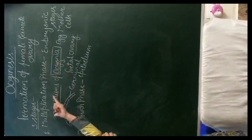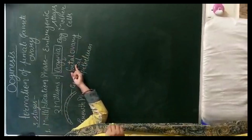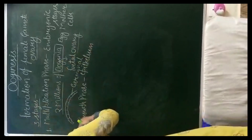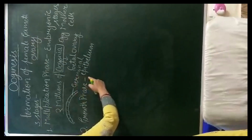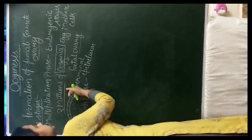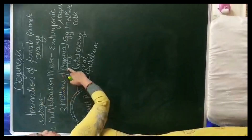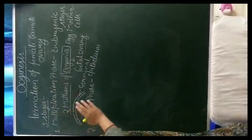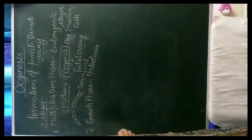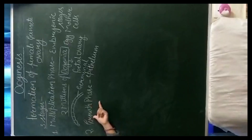That is why it is called the multiplication phase. This multiplication phase occurs in the ovary of the fetus before birth. The germ cells in the inner lining of the fetal ovary repeatedly divide and form near about two million oogonia. After birth, no more oogonia are formed or added. The oogonia formed in the fetal ovary — this is the multiplication phase.